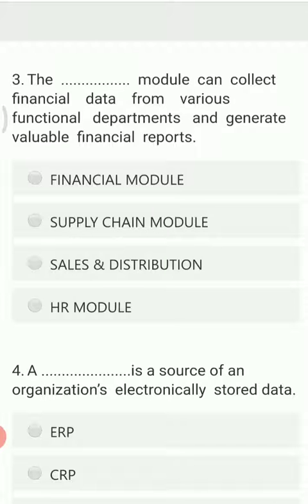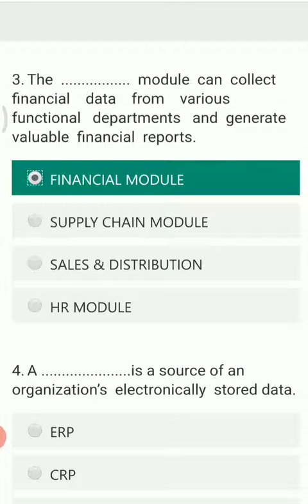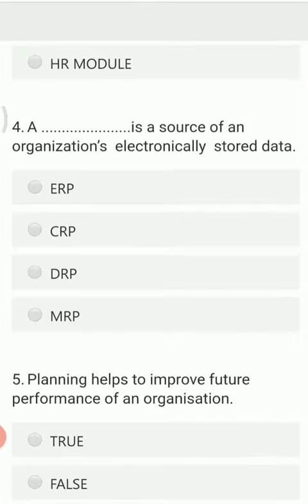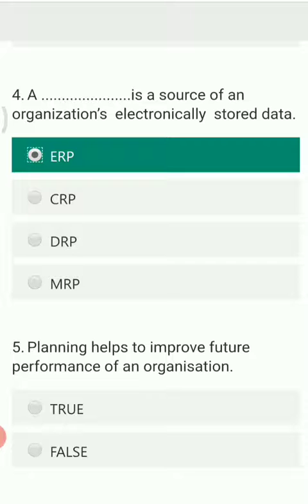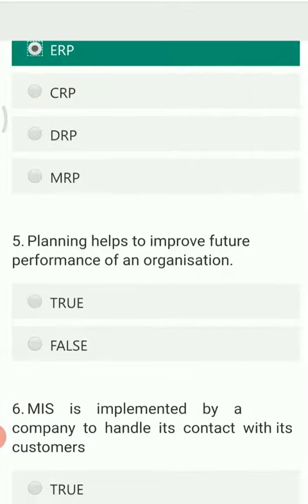Next: the blank module can collect financial data from various functional departments and generate valuable financial reports. The options are financial module, supply chain module, sales and distribution, and HR module. The right answer is financial module. Next: blank is a source of an organization's electronically stored data. The options are ERP, CRP, DRP, and MRP. The right answer is ERP, that is enterprise resource planning.